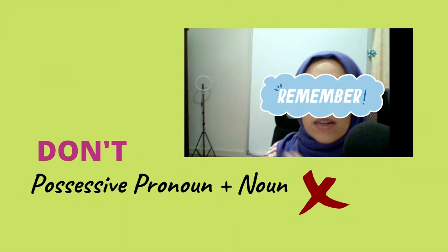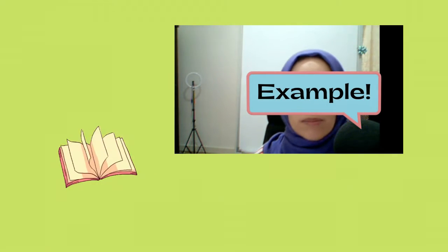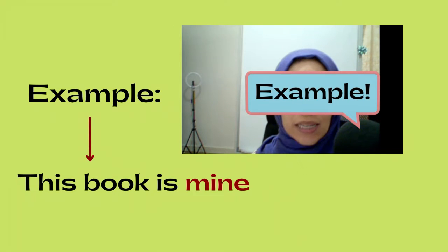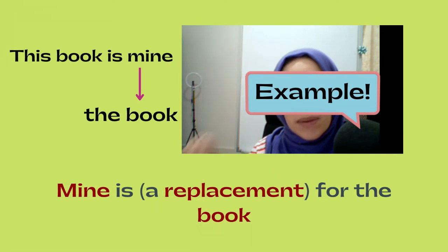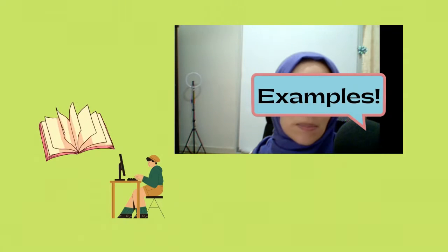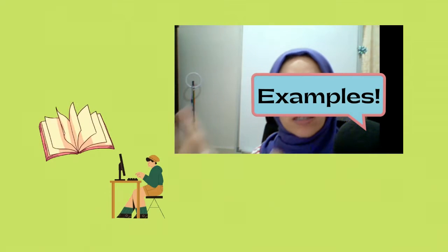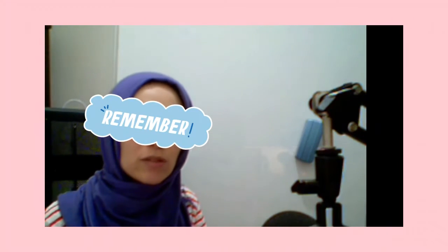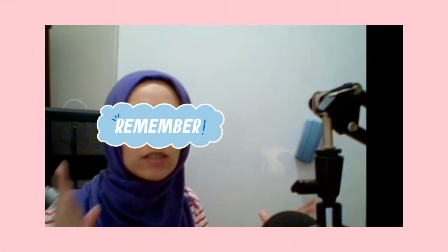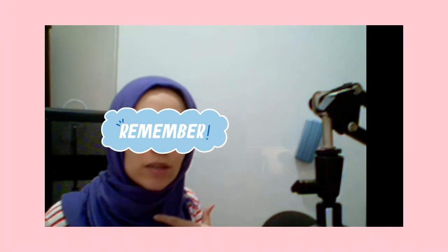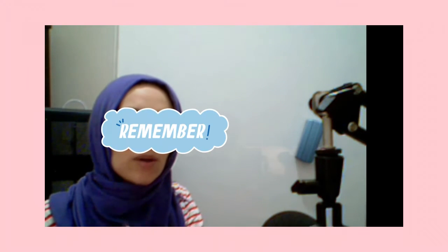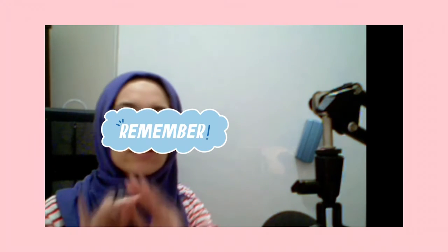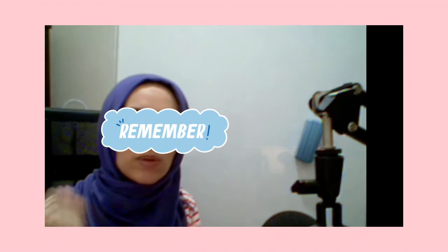Possessive pronouns can be used to replace the noun. Number two, they can be used by themselves — without the need to have a noun with them. For example, if I am talking about my book, I say 'this book is mine.' Mine here is a replacement for the book. Now let's look at some examples to understand how we can use possessive pronouns in sentences.